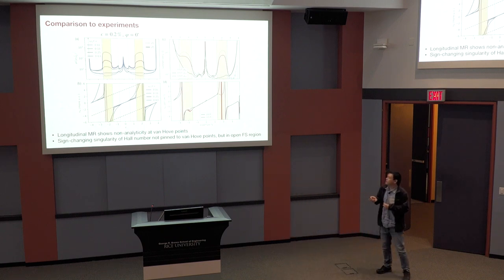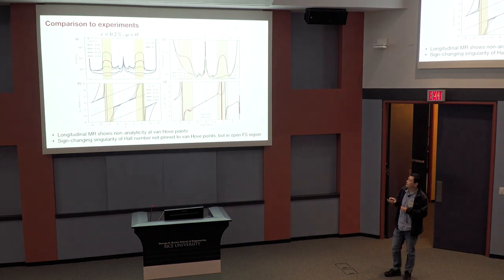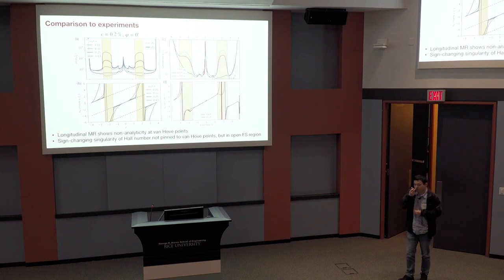So yeah, so this is a quantitative comparison to the transport experiment. These are the experiments for the Hall number and the resistivity, and these are the theories. So in addition to what I just described, this b-squared behavior due to open Fermi surfaces, there are additional features at the first van Hove point, which shows up as a non-analytic spike cusp-like behavior. And what the experimentalists did after we produced this, is they went back and dug up their old data, and see that if I increase the field from 0 to 0.5, the shoulder-like behavior does develop into a cusp-like behavior as well.